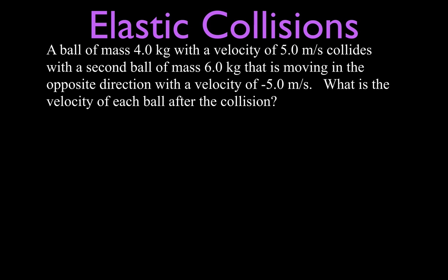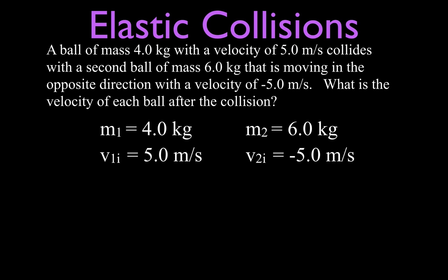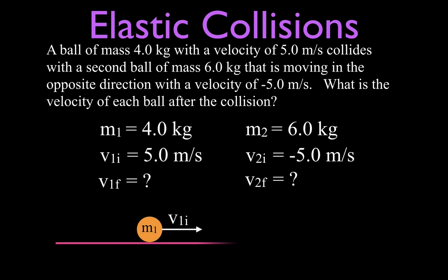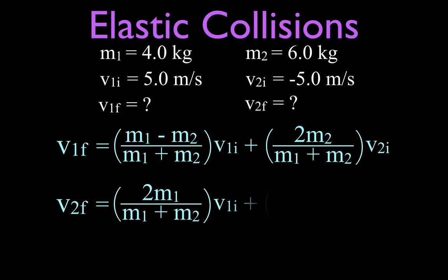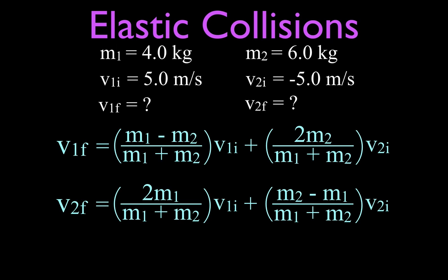We want to know the velocity of each ball after a perfectly elastic collision. Because I have two masses and two velocities and I'm easily confused, I'll write them down: m1 is 4 kilograms, v1 initial is 5 meters per second; m2 is 6 kilograms, v2 initial is minus 5 meters per second. Then let's make a picture. We have two equations — they look a little complicated, but by this point they shouldn't be too complicated.